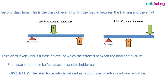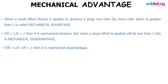What is force ratio? Force ratio is defined as the ratio of load to effort. When a small effort is applied to produce a large load, the force ratio is greater than one and is called mechanical advantage. But when the effort applied is greater than the load, it is less than one and is called a mechanical disadvantage.